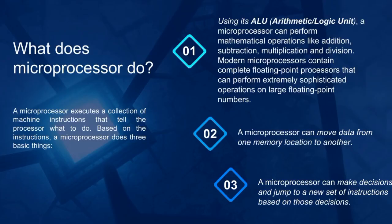What does a microprocessor do? A microprocessor executes a collection of machine instructions that tell the processor what to do. Based on the instructions, a microprocessor does three basic things. Number one, using its ALU or arithmetic logic unit, a microprocessor can perform mathematical operations like addition, subtraction, multiplication, and division. Modern microprocessors contain complete floating point processors that can perform extremely sophisticated operations on large floating point numbers.